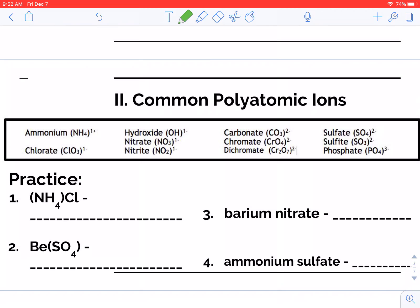So number one and number two, we're just naming these compounds. So we see NH4, we recognize that's a polyatomic. So that will be ammonium. And then we just have plain chlorine anions, so that would be chloride.